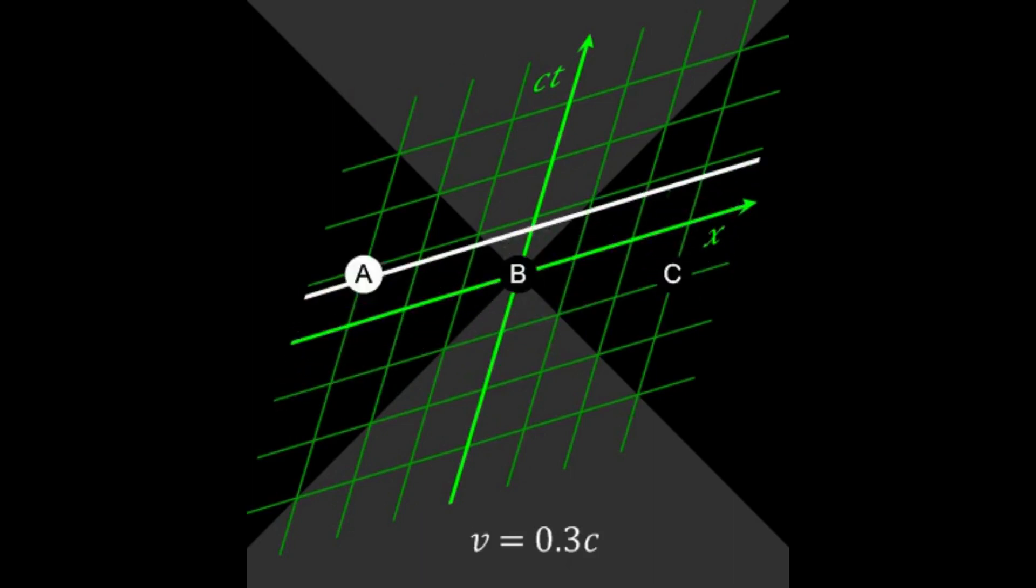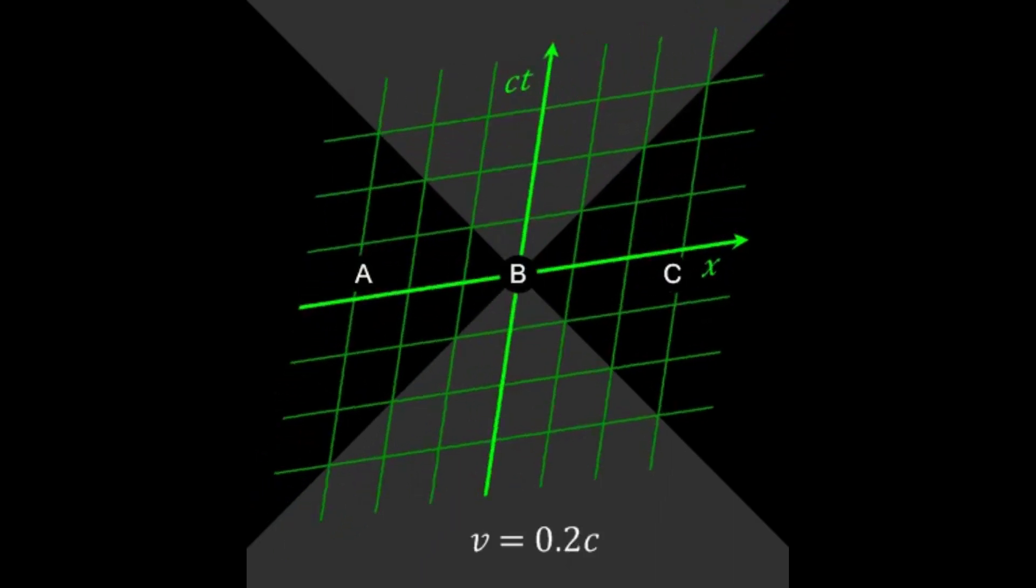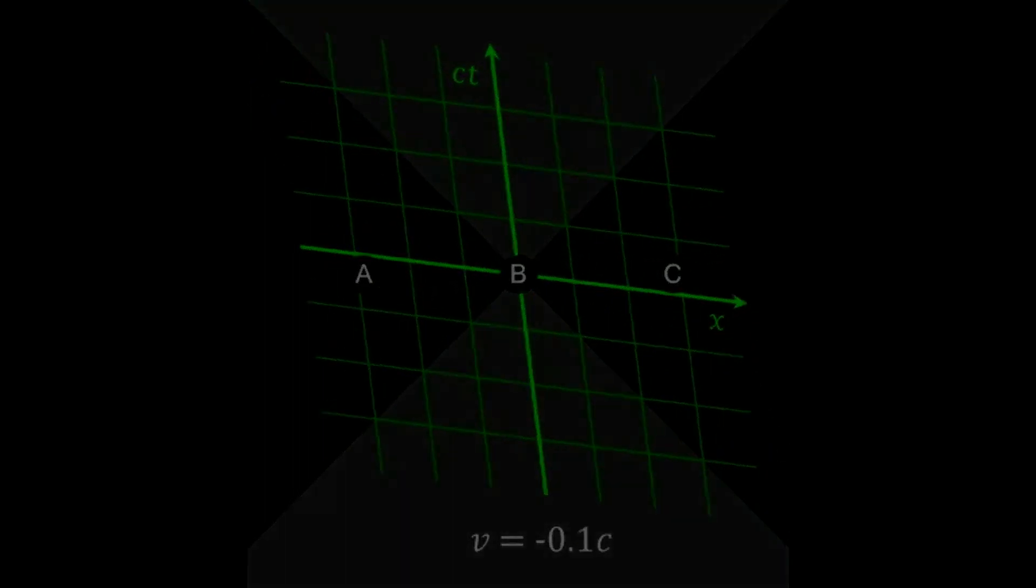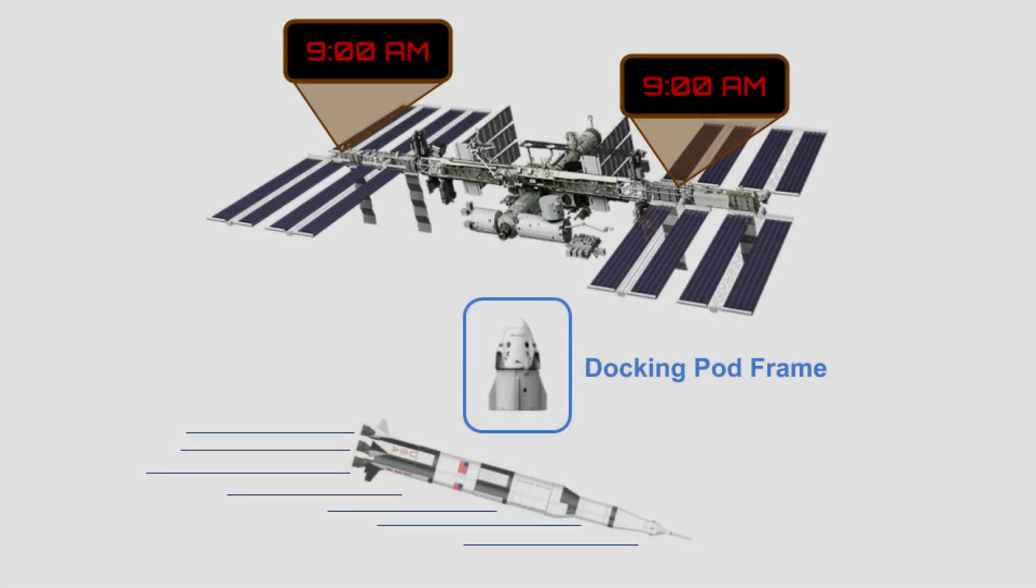It is clock desynchronization paired with the fact that different observers can have different relative speeds compared to a pair of clocks. A pair of clocks that appear synchronized from one point of view can from another point of view appear desynchronized.